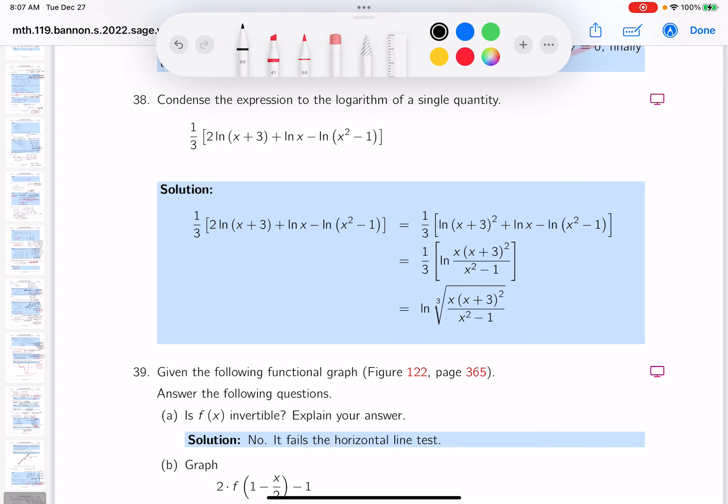This says condense it and let's take a look at it. The first thing to condense it is just work on inside the parentheses. So it's one-third and what do I see over here? I see the natural log